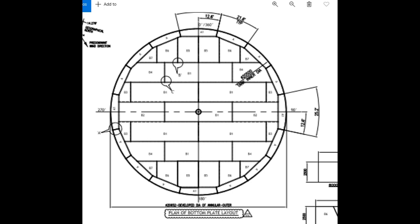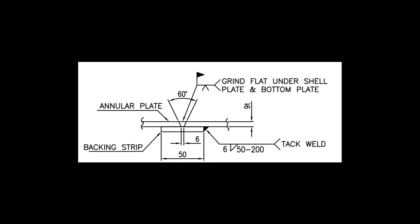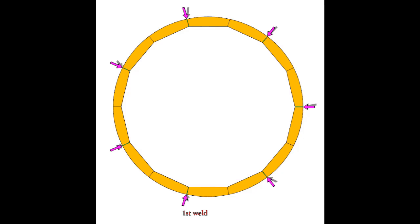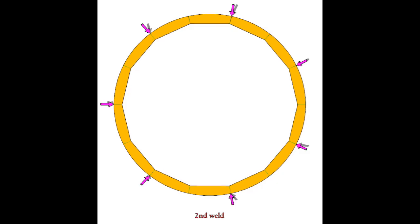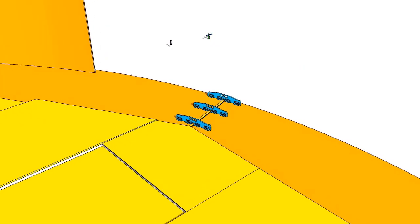Fit up of annular plates joints shall be carried out using proper jigs and fixtures. Care shall be taken while fit up such that gap between the annular plates shall be carried out as per approved drawings. Annular plates joints welding shall be carried out by welding alternative joint at four quadrants. Provide proper support by using channel and beams to avoid buckling.